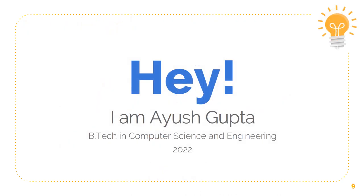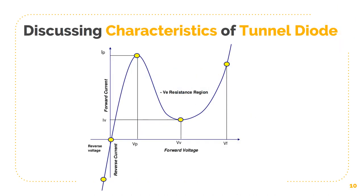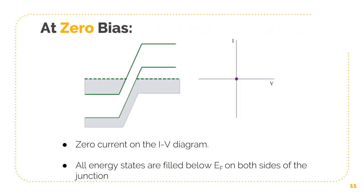Hello friends, I am Ayesh Gupta. Let's discuss the characteristics of tunnel diode. At zero bias, the given figure shows the energy band diagram which produces zero current on the I-V diagram.